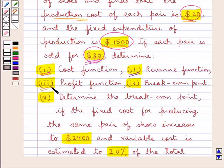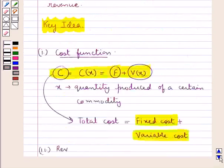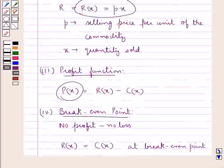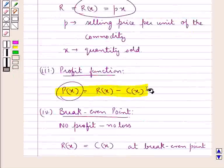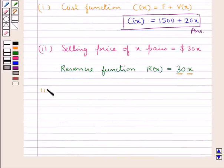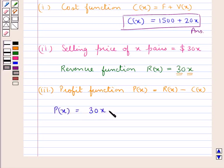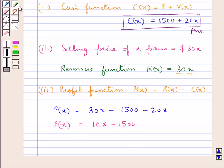Next, we find the profit function. The profit function P(x) = R(x) − C(x), which is the revenue function minus the cost function. So P(x) = 30x − (1500 + 20x), which gives us 10x − 1500 as the profit function.